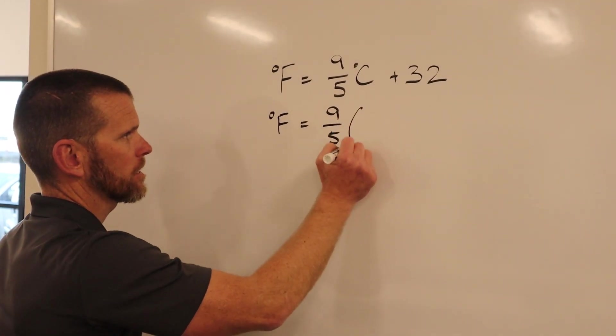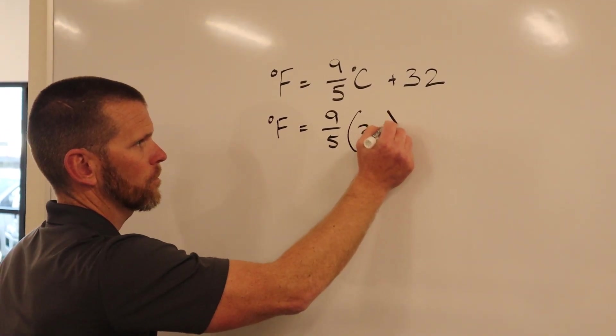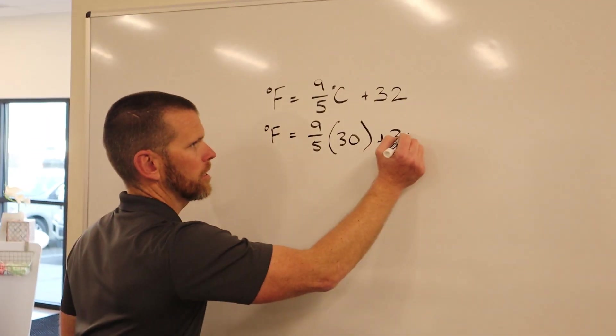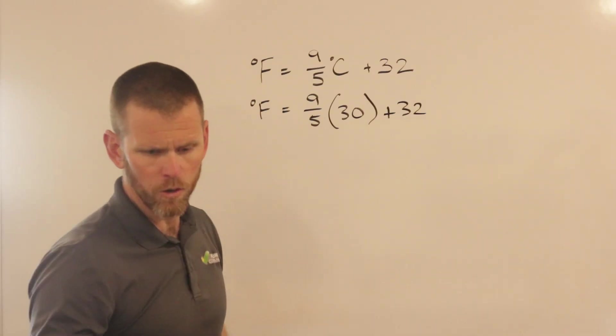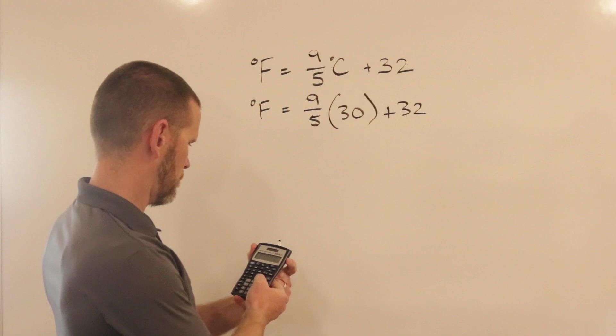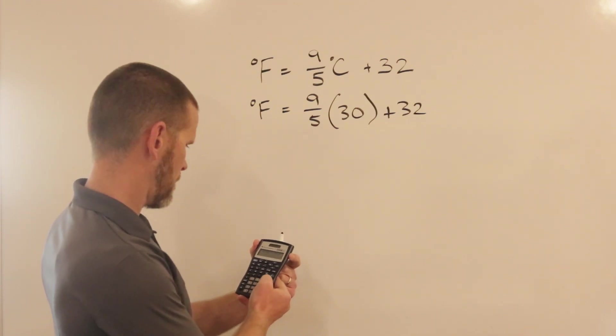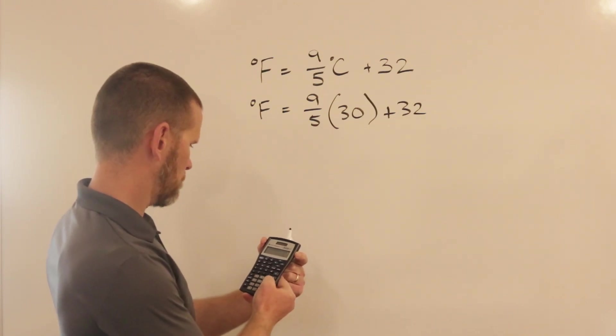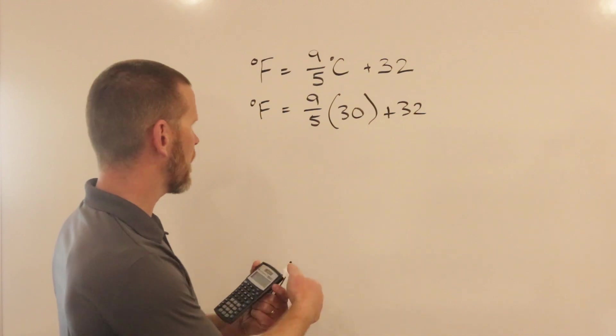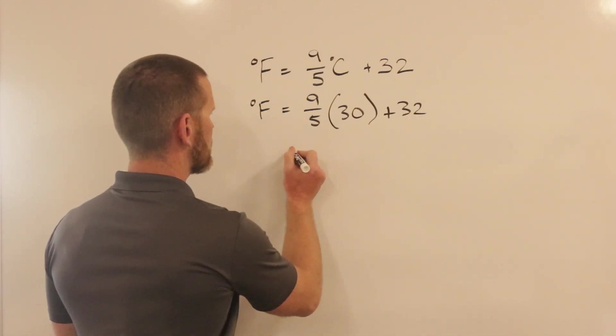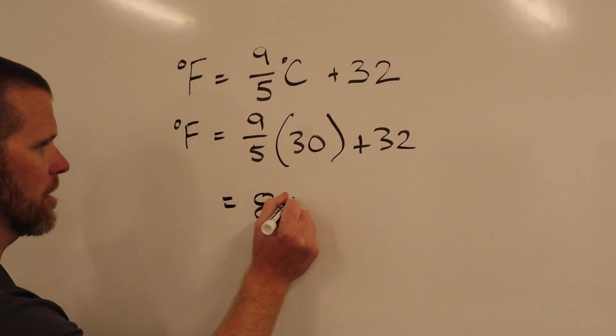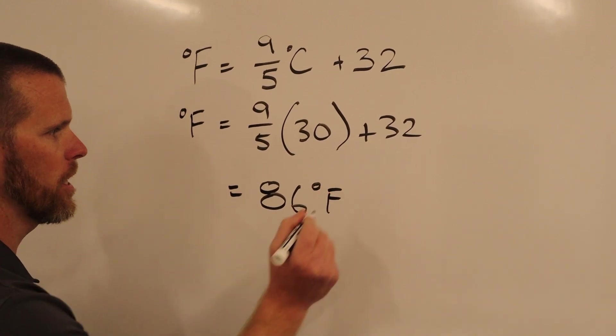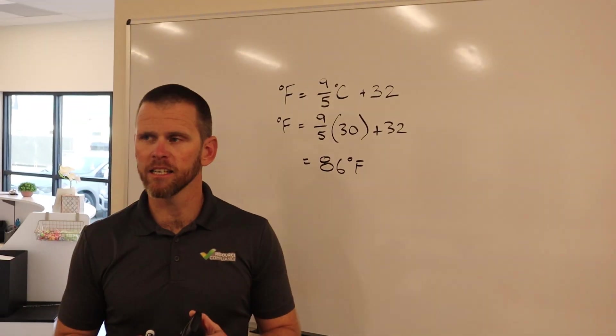9 over 5 times 30 plus 32. On the calculator, if you grab a calculator, you can just go 9 divided by 5 times 30 plus 32, and we find that our answer is 86 degrees Fahrenheit. So 30 degrees Celsius equals 86 degrees Fahrenheit.